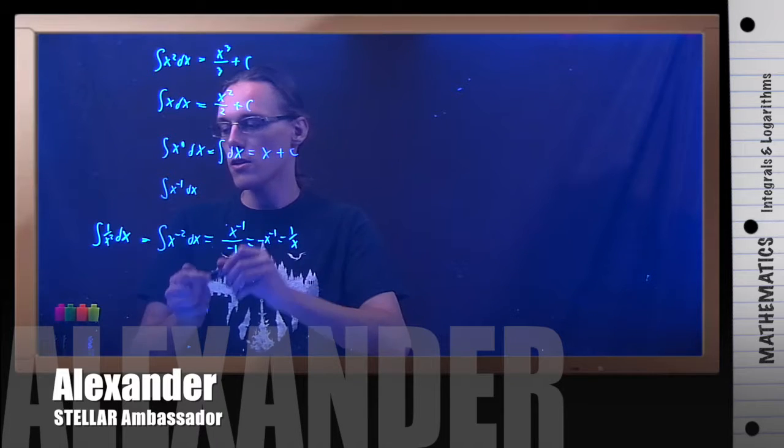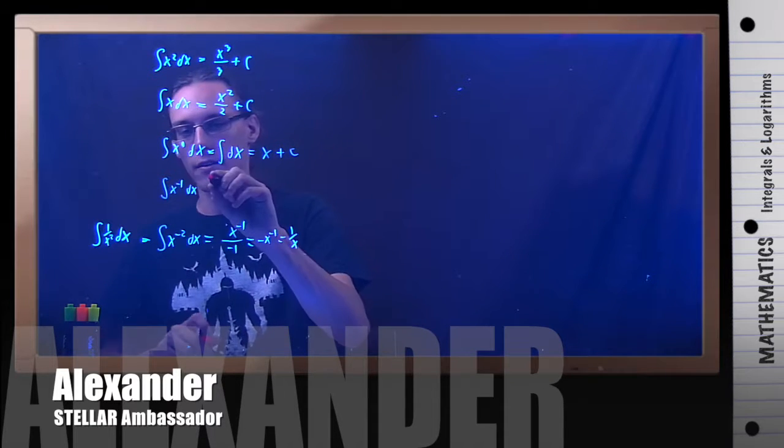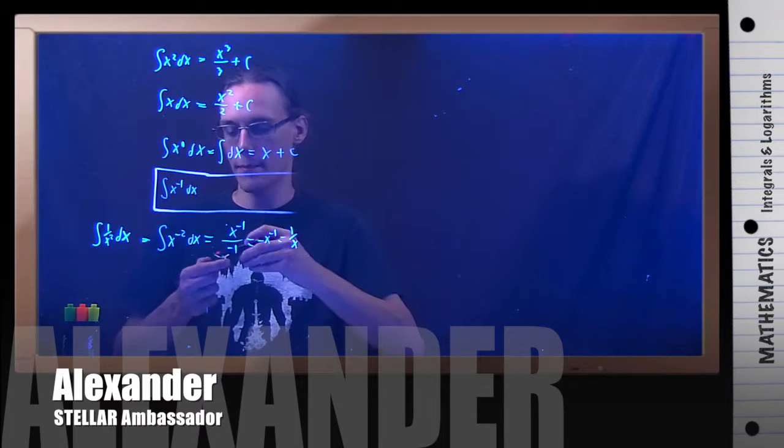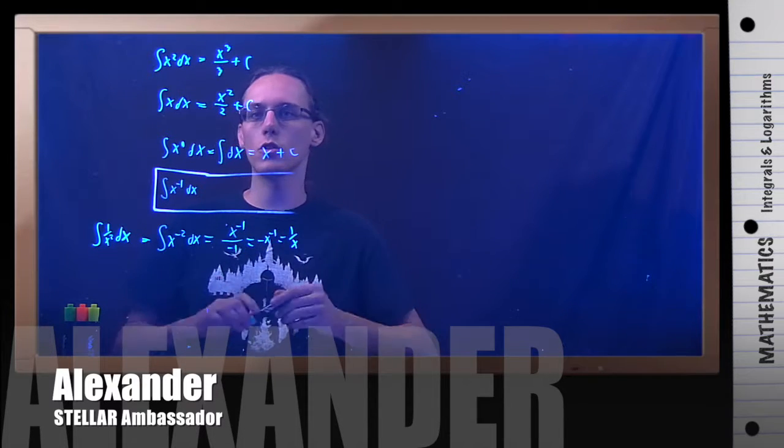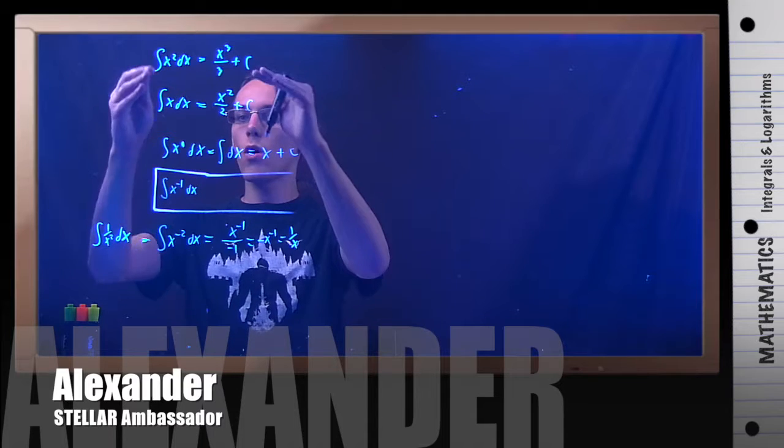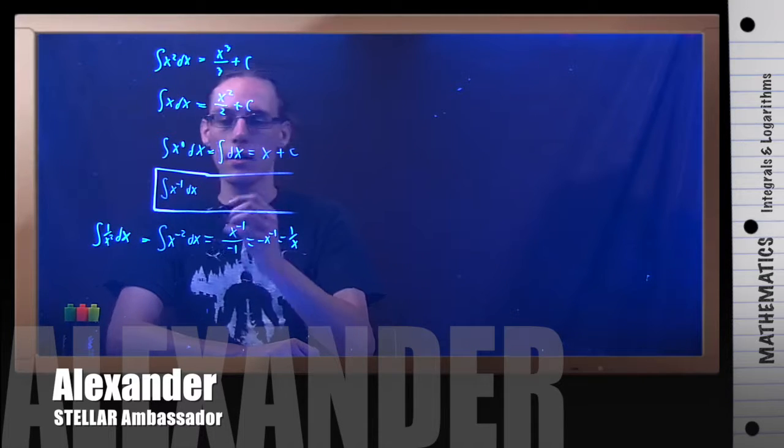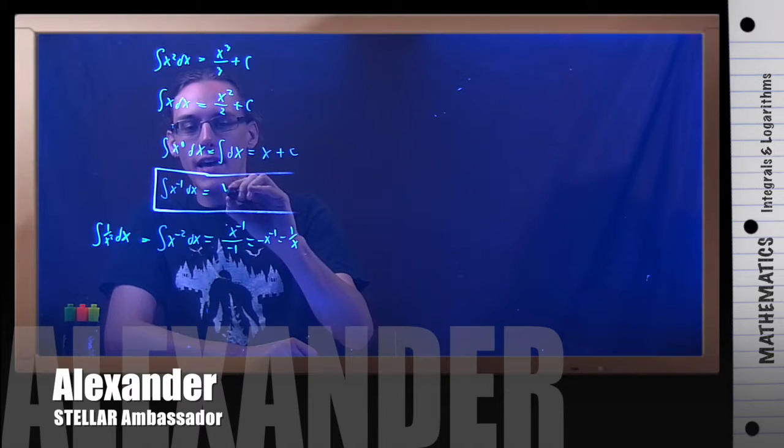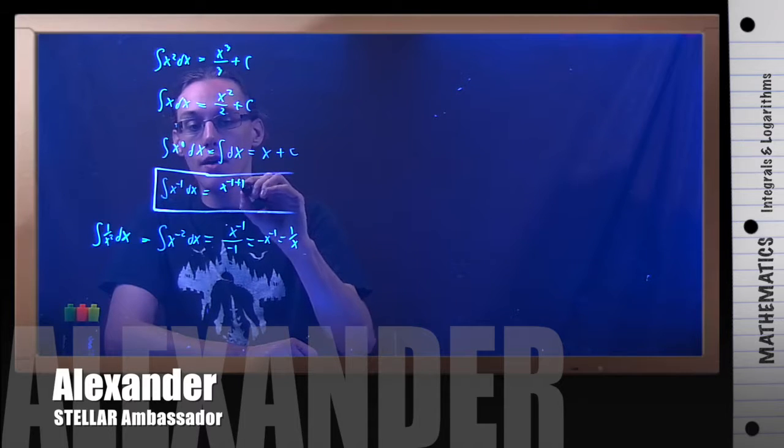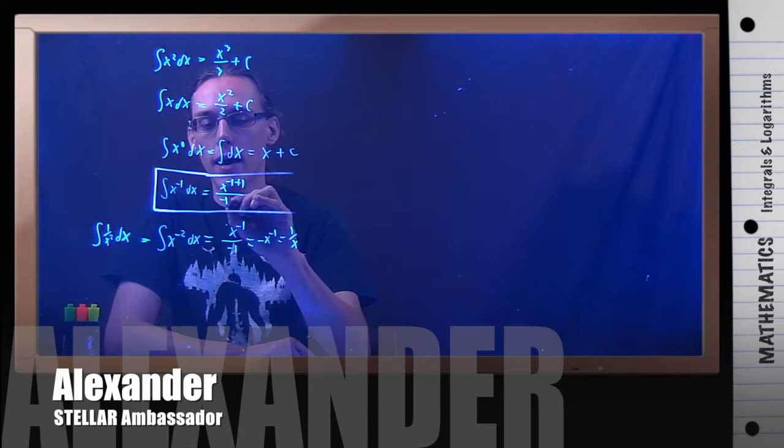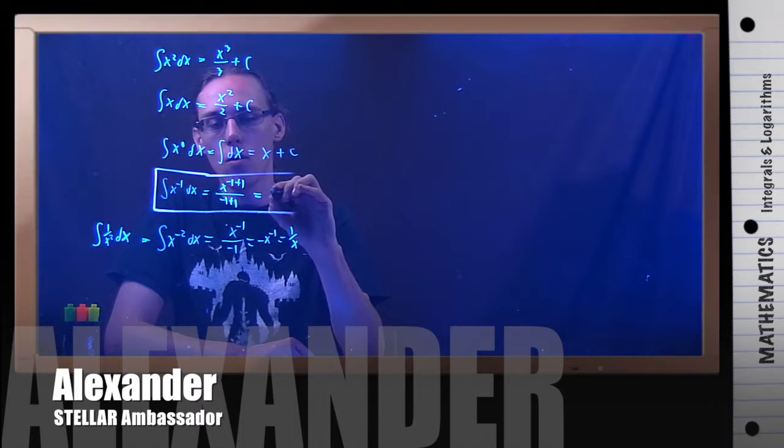So let's look at this guy right here, x to the negative 1. And watch what happens. If I try to just do the rule that worked for all of these other numbers, then what would happen is I would have x to the negative 1 plus 1, add 1 to the power, and divide by the new power.